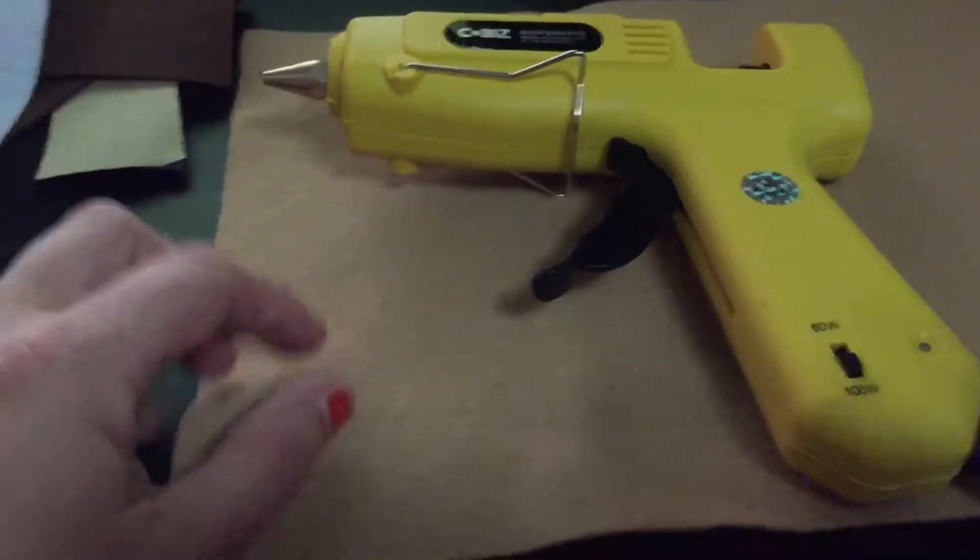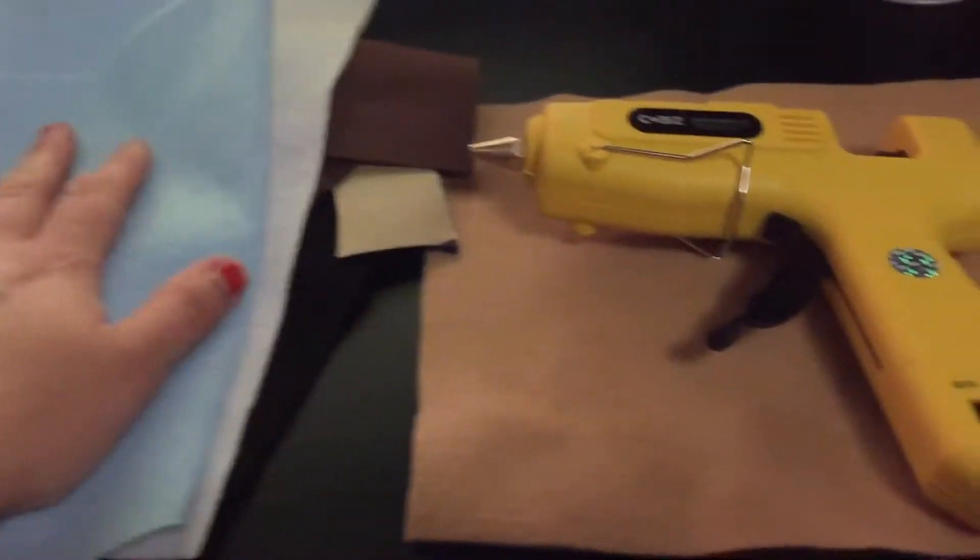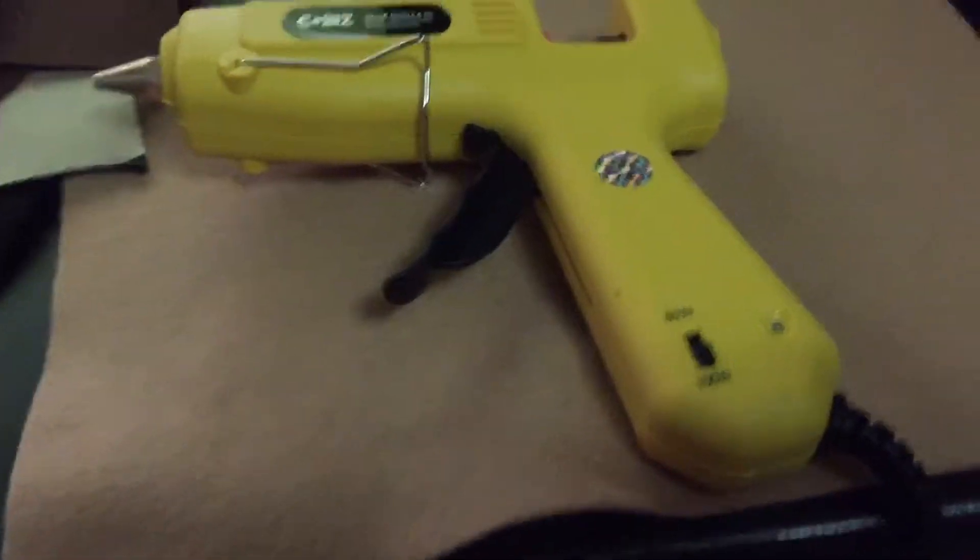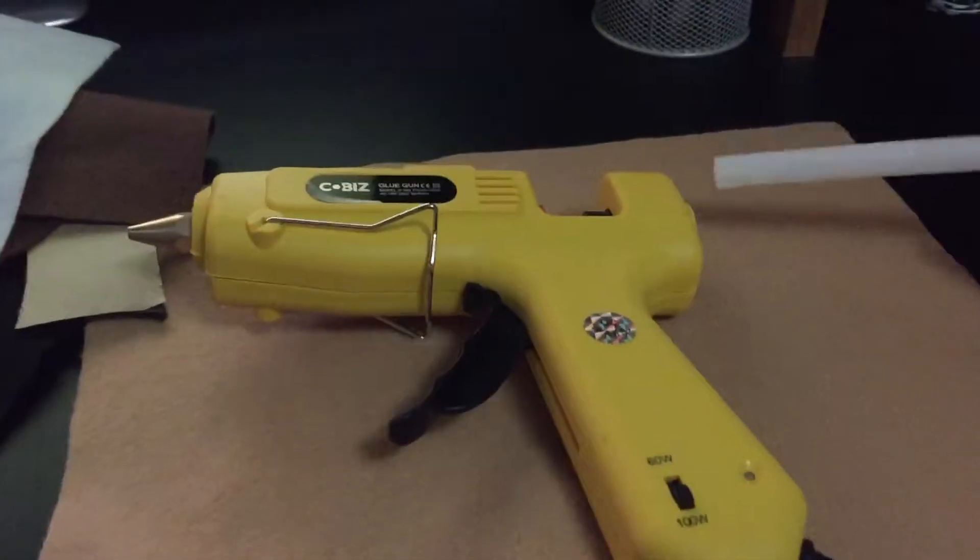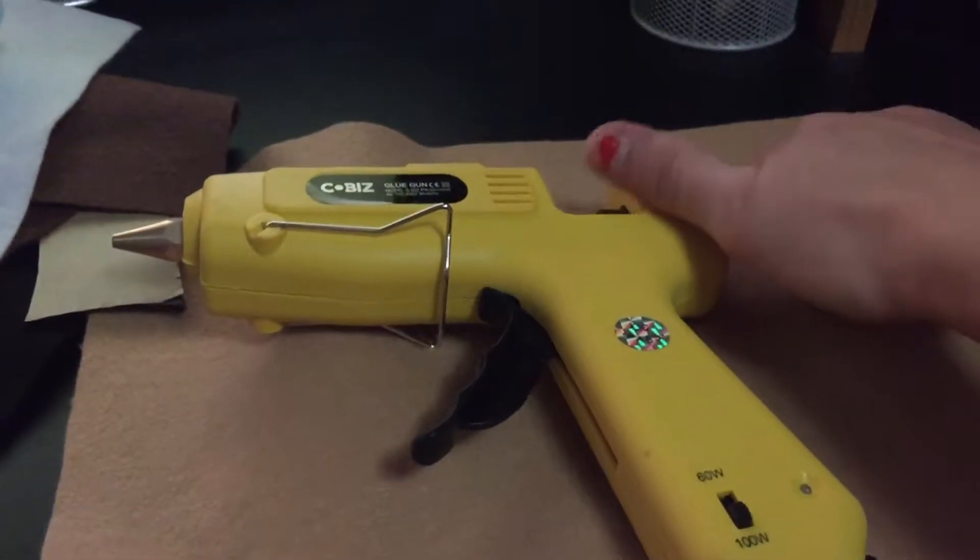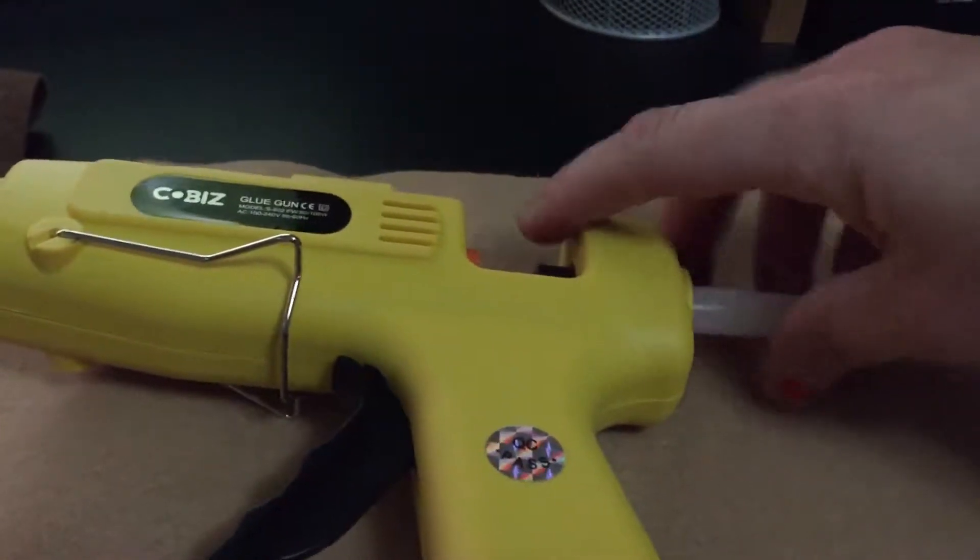When I'm doing something like this felt right here - I'm getting ready to do a project for my son's school - I usually use the 100 watts because it seems to hold the felt together better. When you receive the glue gun, you get five glue sticks with it, and they just go right into the back, right there in the back as you can see.